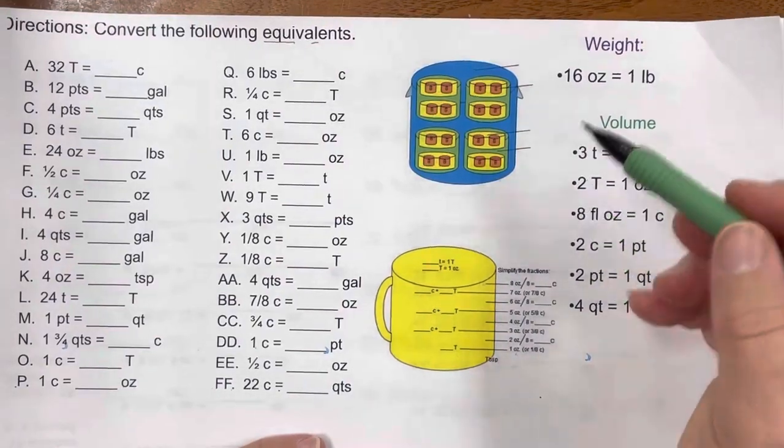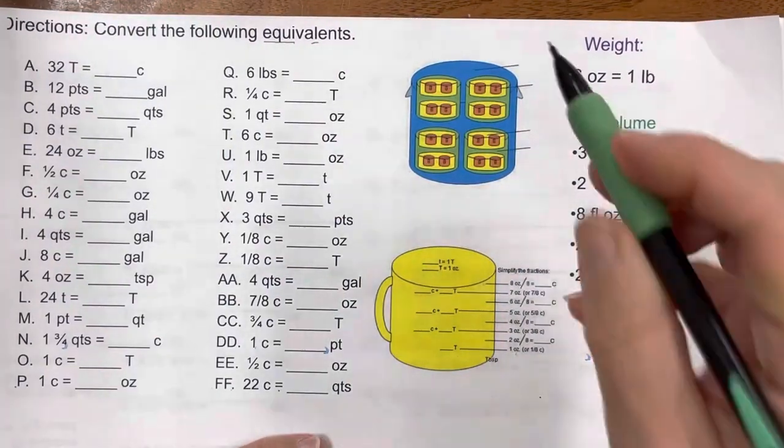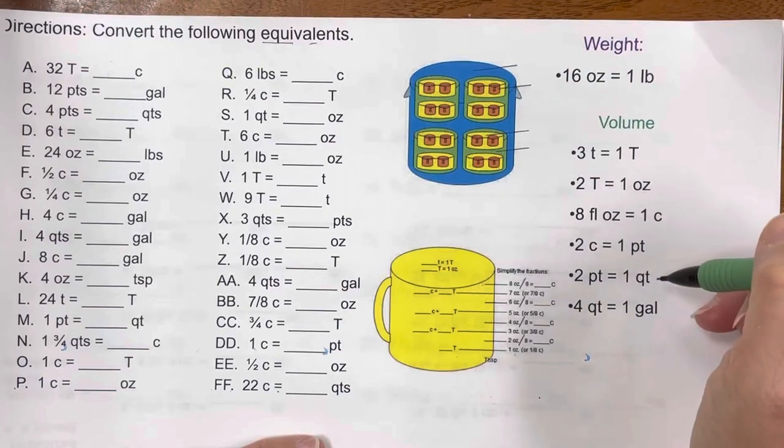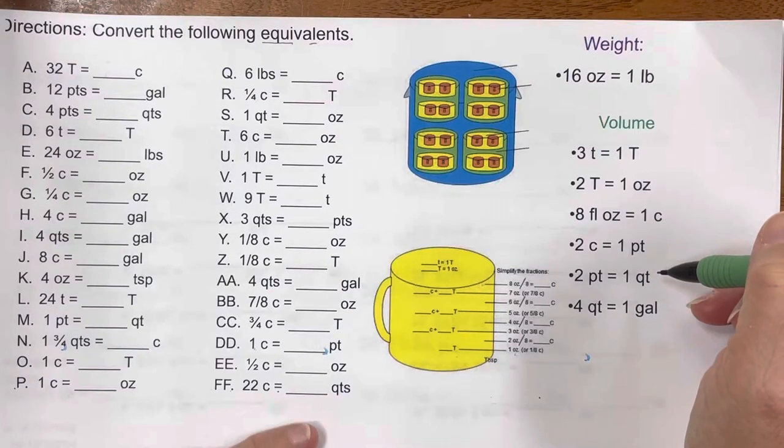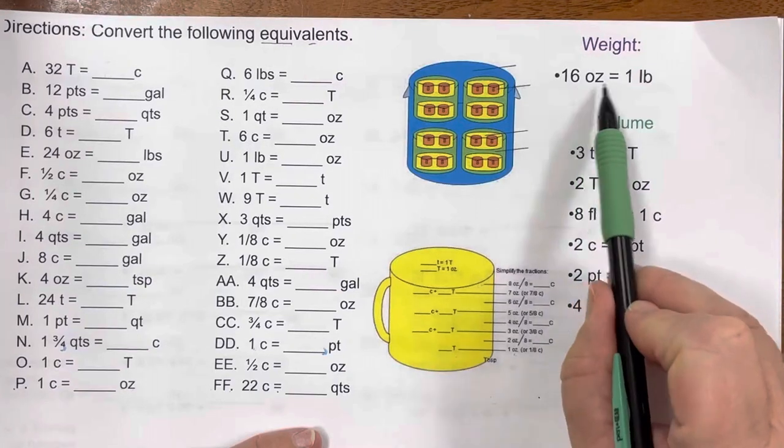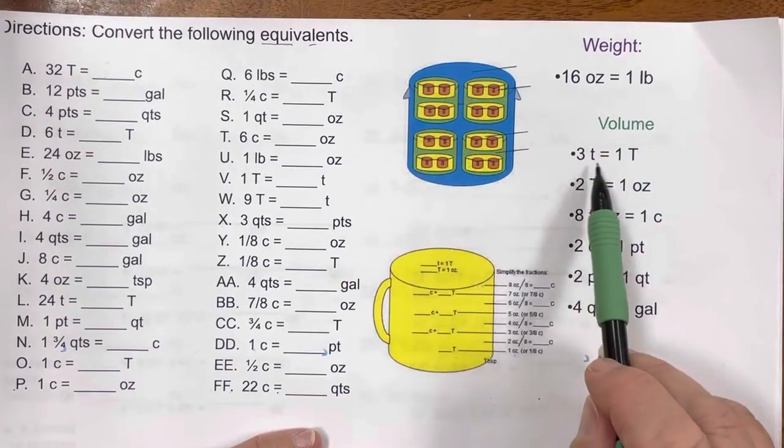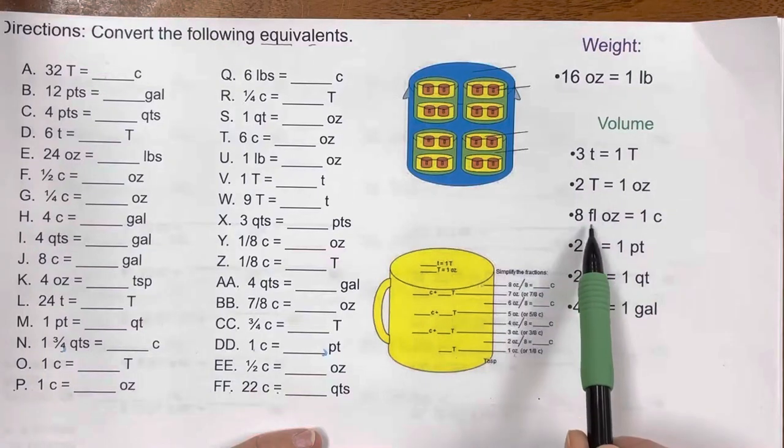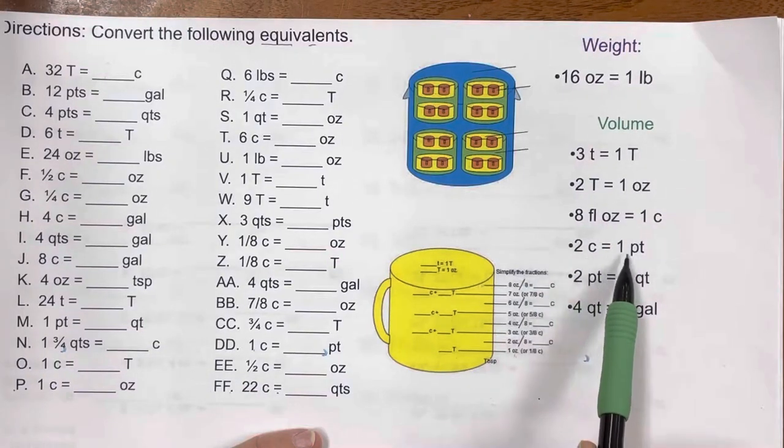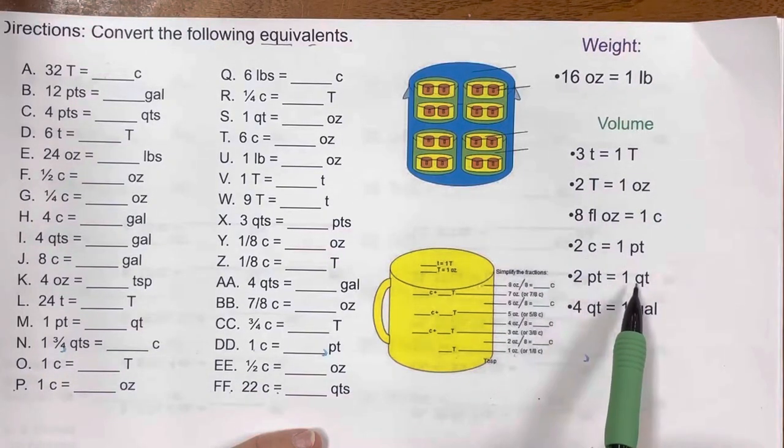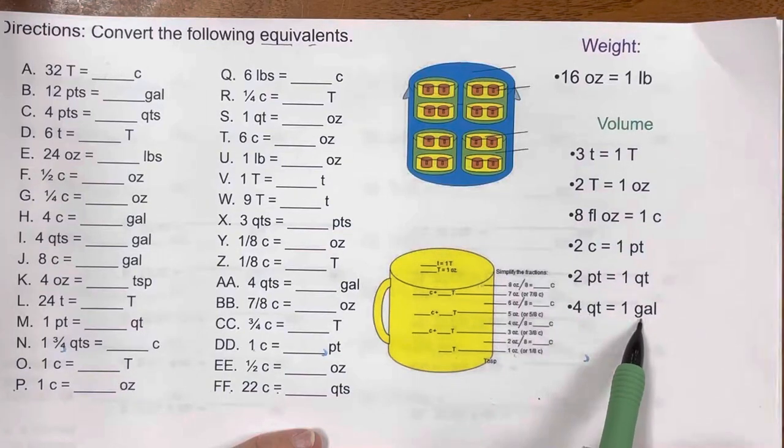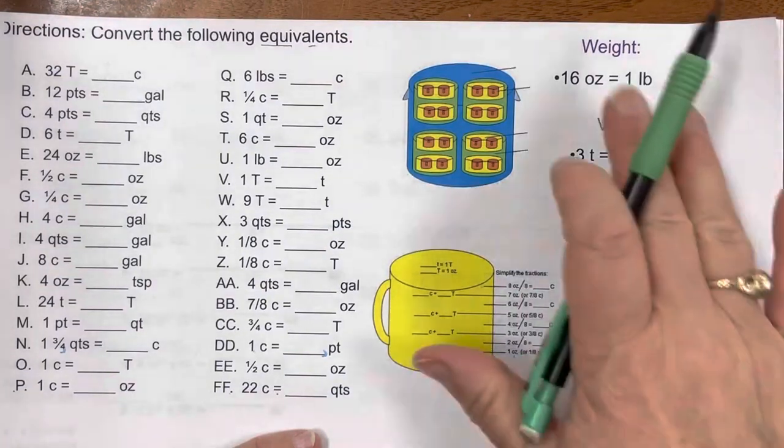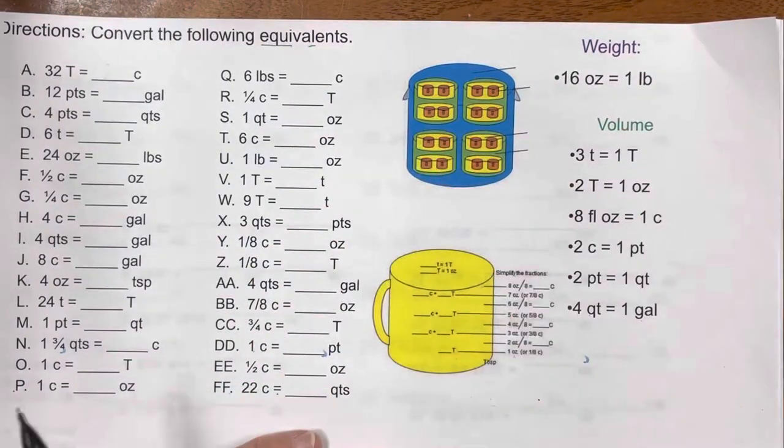You need to know the knowns, the known measurements. Just like there's 12 inches in a foot, we know there are 16 ounces in a pound, 3 teaspoons in a tablespoon, 2 tablespoons in an ounce, 8 ounces in a cup, 2 cups in a pint, 2 pints in a quart, 4 quarts in a gallon. So if I know these, then I can do these equivalents.